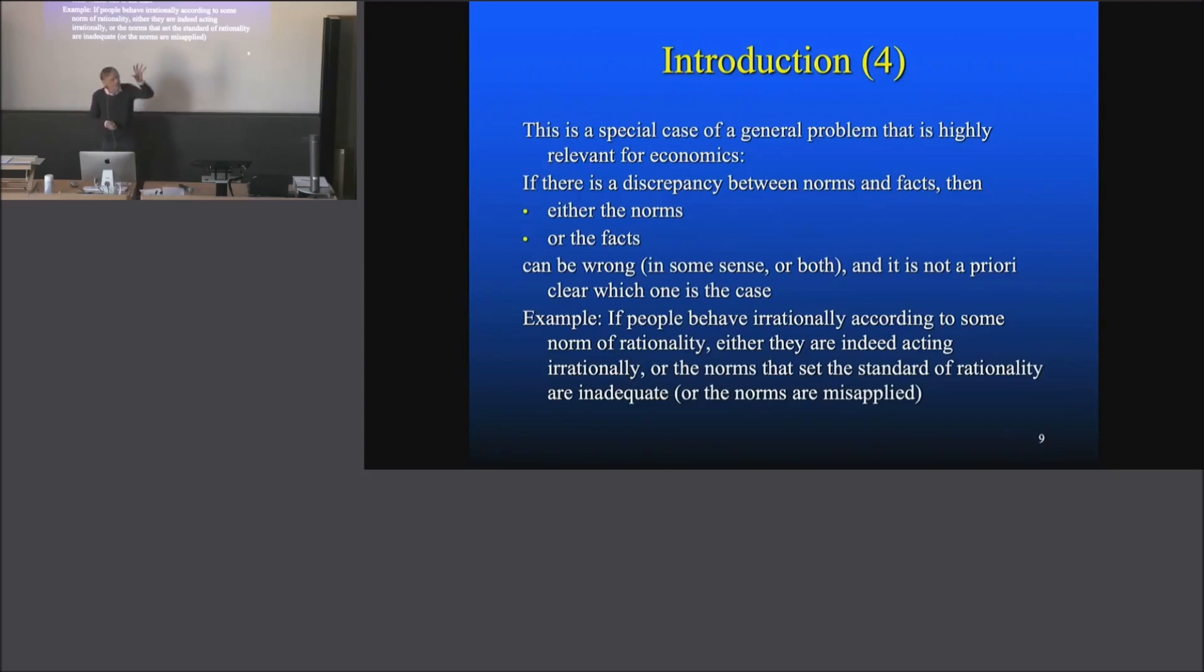Then there are always two possibilities. You have norms for rationality and you have behavior. And then you say, 'Oops, that doesn't fit.' Either they are indeed acting irrationally—that may be the case—but it could also be that the norms, that the standard of rationality, are inadequate or the norms are misapplied. So it's not clear if someone claims, 'I'm giving you the norms for rationality. Here they are.' That this person is right. It may be wrong what she's saying. Therefore, it's not clear. It could be that the person is acting rationally and the norms are wrong.